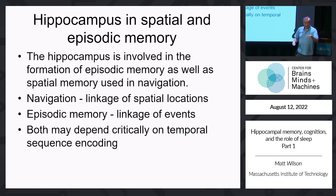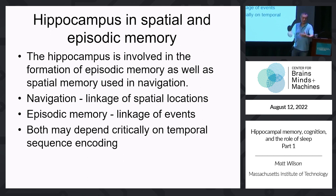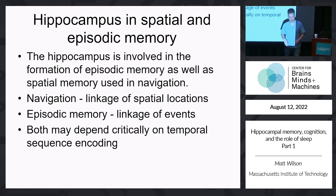There must be some shared computation between these systems, but also something that can be distinguished in terms of function and capacity between rodents and humans. The role of the hippocampus is demonstrated through lesion studies and the classic case of Henry Molaison—HM—who underwent bilateral resection of the medial temporal lobe and lost the ability to form new memories of experience, so-called episodic memory. This launched interest in the hippocampus as a structure with modular function in the brain.